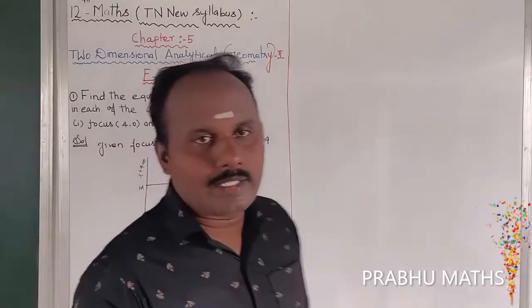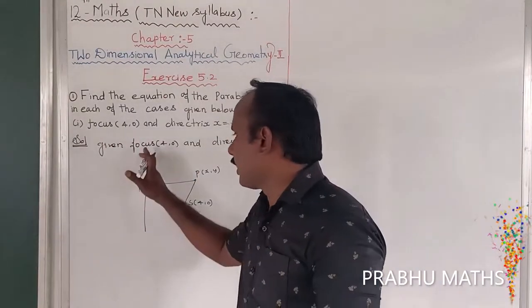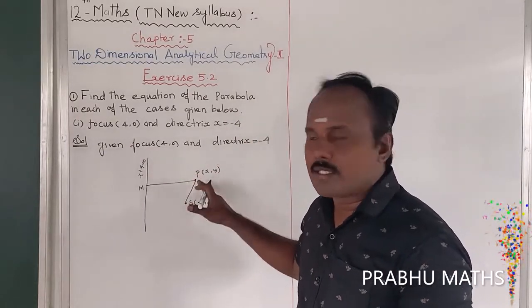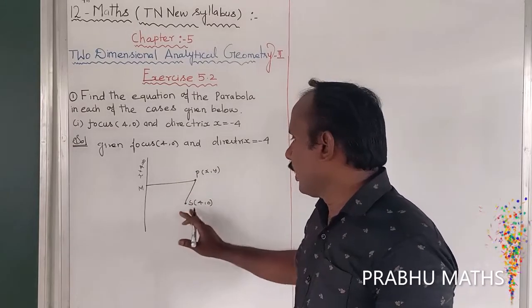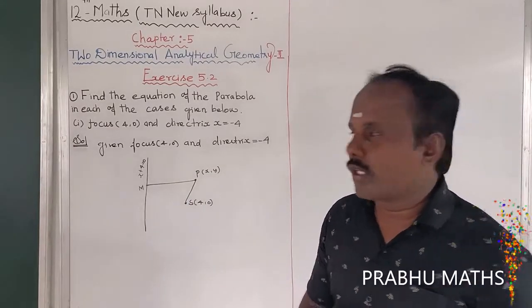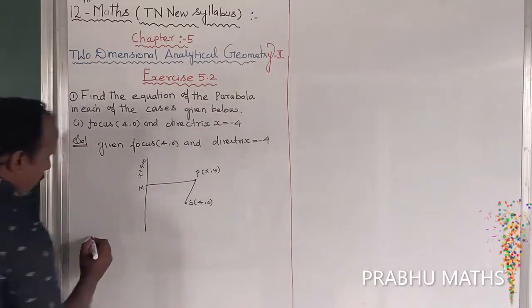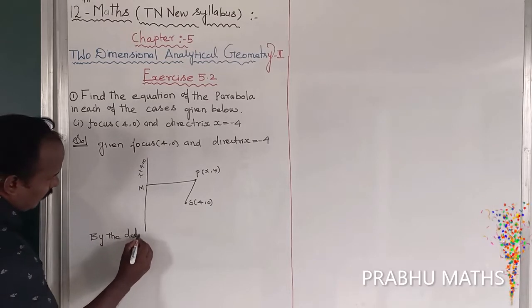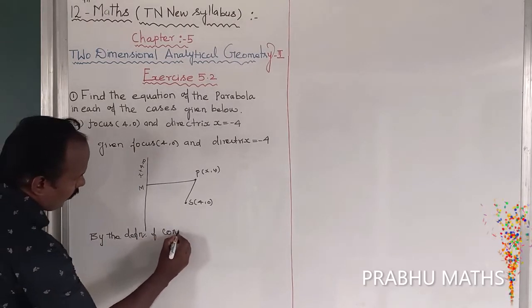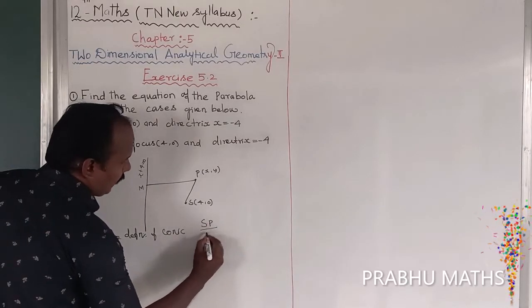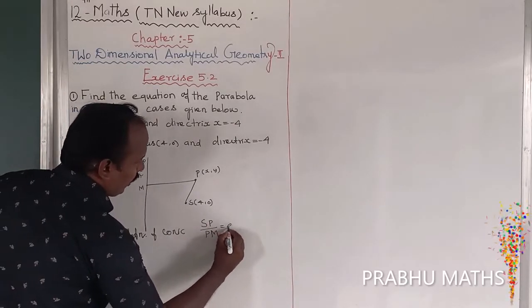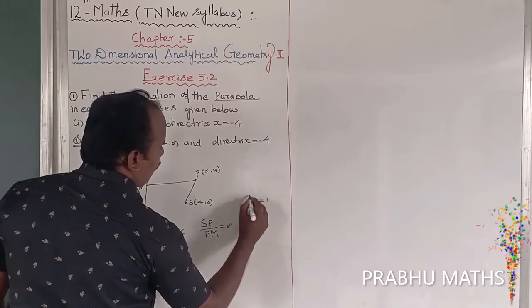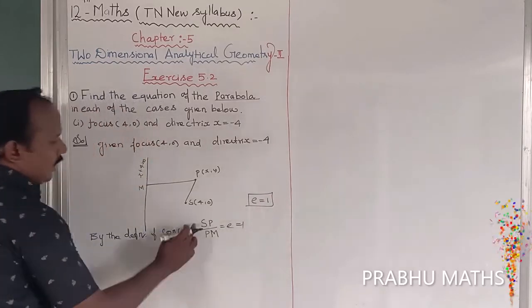The directrix line M is a straight line. P is any point on the plane, and S is the fixed point called the focus. By the definition of a conic, SP divided by PM equals e. Since this is a parabola, e is equal to 1.